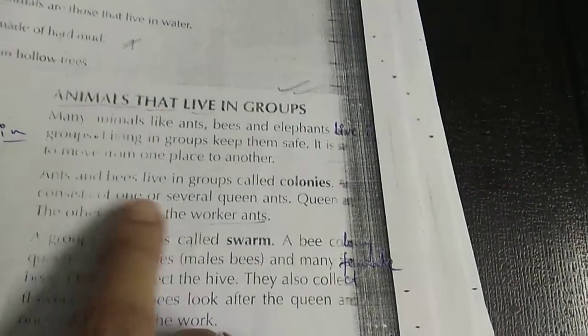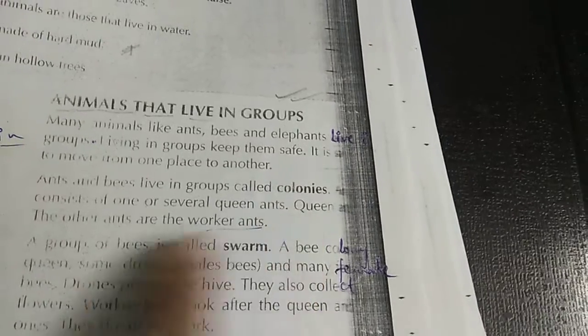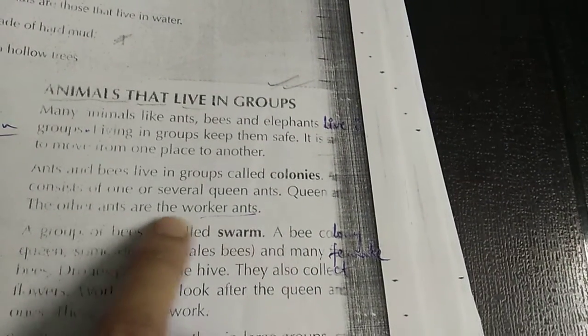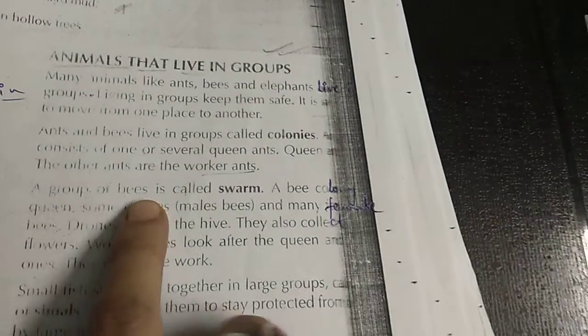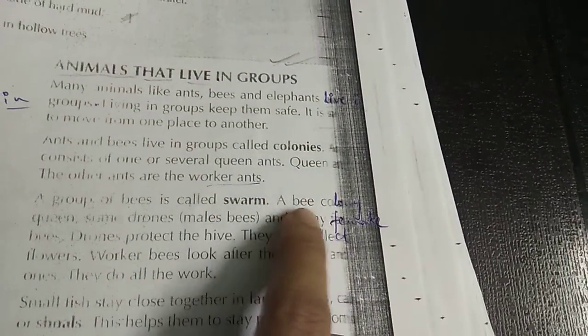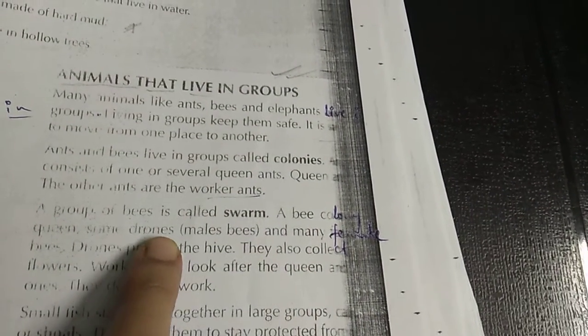Ants and bees live in group called colonies. This group consists of one or several queen ant. Queen ant and the other ants are the worker ant. A group of bees is called swarm. A bee colony has queen, some drone.